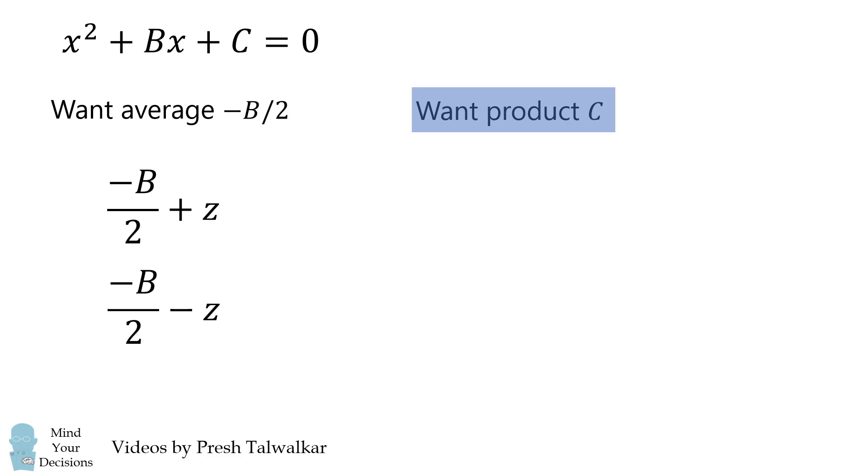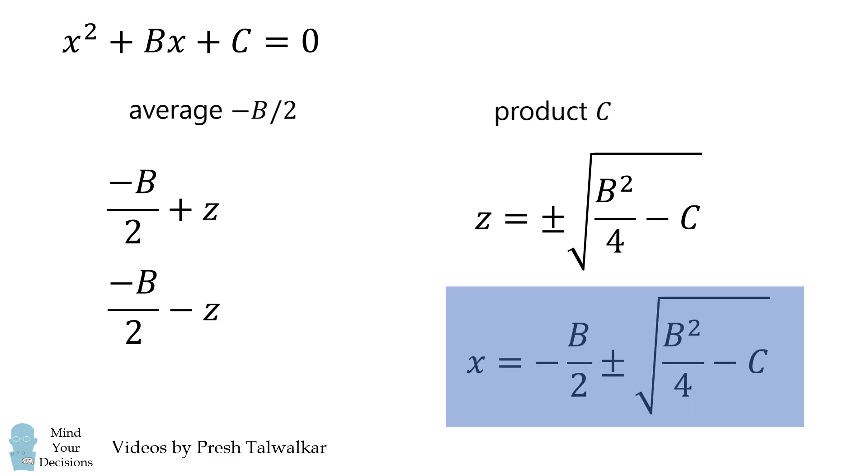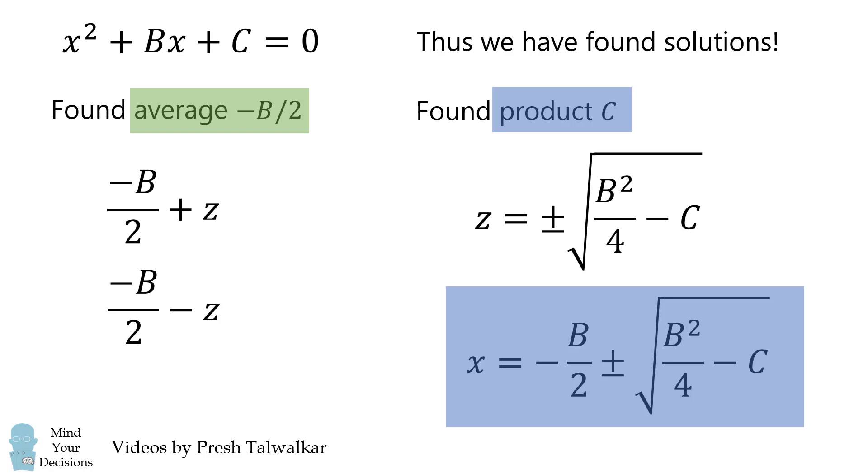We then multiply these together and set them equal to C. This is nice because we have a convenient formula here. It's a difference of squares. We have B squared over 4 minus Z squared, and that's equal to C. We can then readily solve this equation for Z, and then we have some candidates. We have these two numbers for X, and what's nice is that we've actually found two numbers that have an average of negative B over 2, and we found two numbers that have a product of C. Therefore, these do satisfy what we need. We could factor the equation, and we have found solutions.